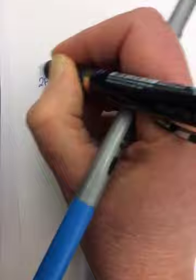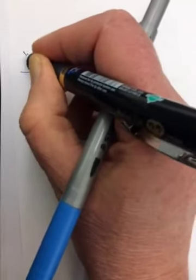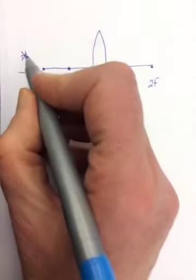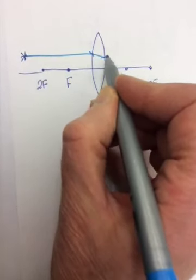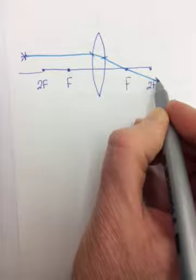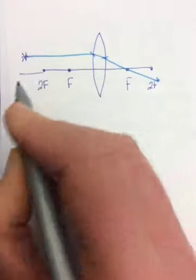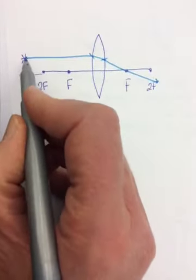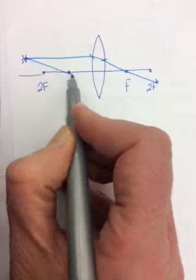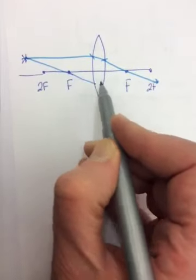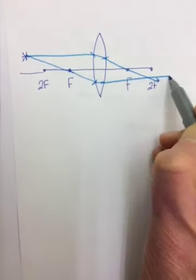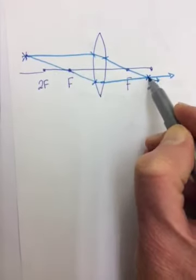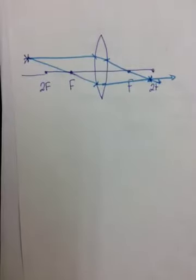If I put an object somewhere out here, goes in parallel to the principal axis. The principal axis, as we saw on the other side, goes in through F, and I'll do these for real tomorrow. And it's going to get bent in such a way that it's going to come out parallel to the principal axis. This will be my image.